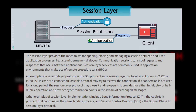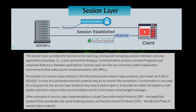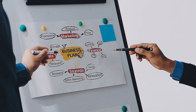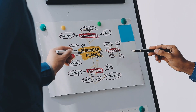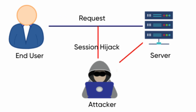Now we have layer five, the session layer. This layer manages and controls the connections between devices — basically starting, maintaining, and closing communication sessions. It's like the meeting organizer keeping track of who's talking to whom. In cybersecurity, session hijacking can be a risk at this layer, where attackers take control of a valid session between devices.